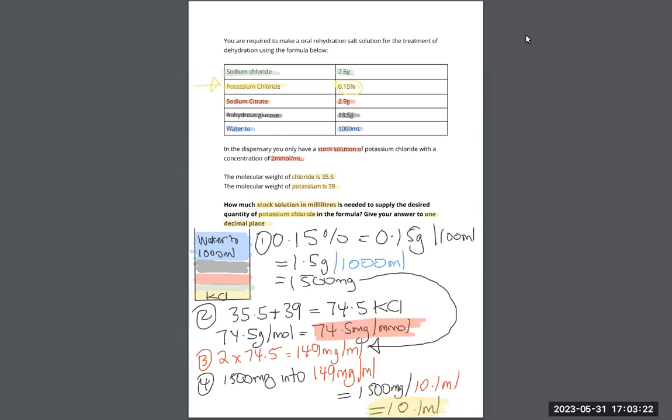I've done the method for you. Step one: 0.15% is 0.15 grams in 100 mils, that's 1.5 grams in a thousand mils because the water is added to a thousand mils. So we get 1500 milligrams.